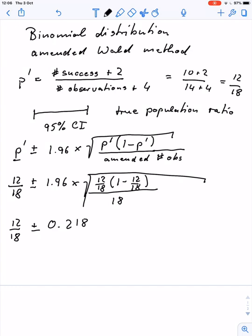12 over 18, that gives us 0.667 plus minus 0.218. So in this case, we get our confidence interval for our ratio of this sample. For example, we go from 44.9% who voted for the paper handout to 88.5%.